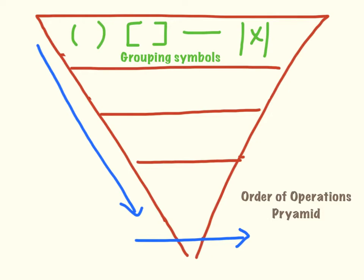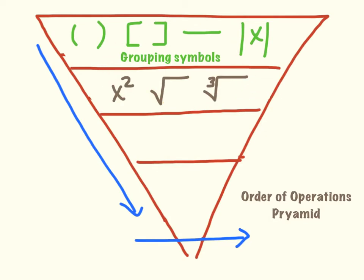Next comes exponents, square root symbols, and cube root symbols as well. Anything with an exponent, a square root, or cube root — those are basically sort of like grouping symbols, so these things kind of all go together. That's the next step.